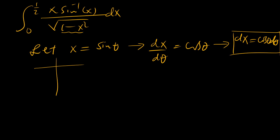Looking at the limits: when x equals 0, theta equals 0. When x equals one half, theta equals pi over 6.